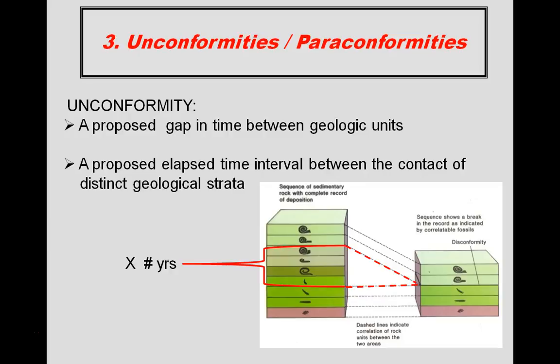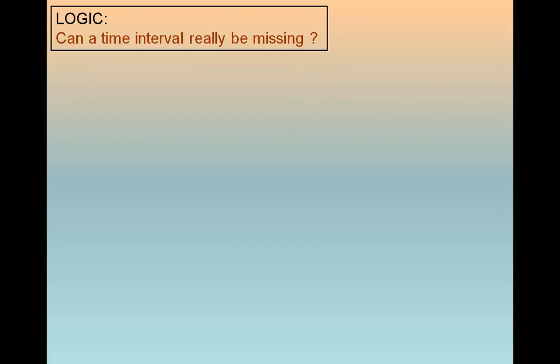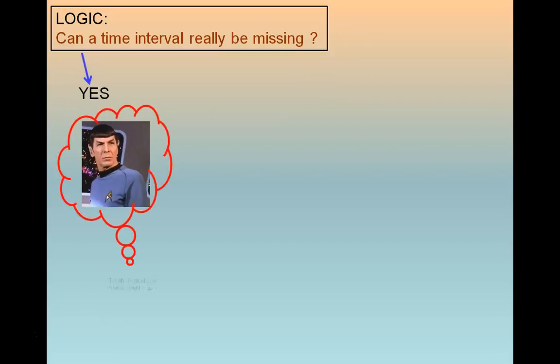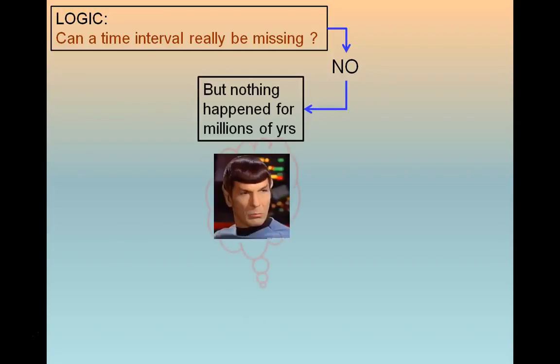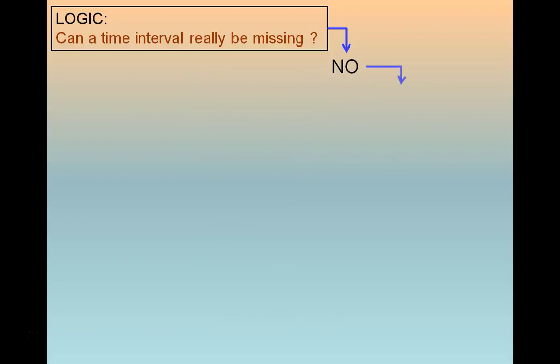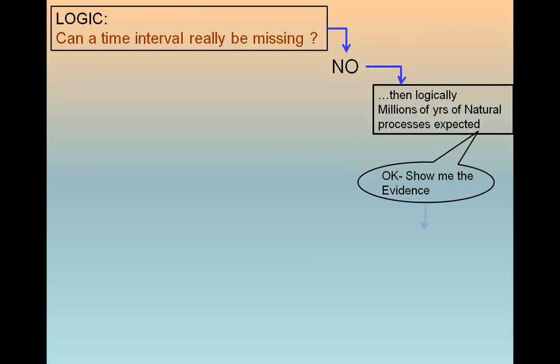We will also show our audience examples of the proposed missing rock formations, which you are told represent millions of years of earth history. The problem with that, the geologic field evidence does not support this idea, thus causing the geologic time column to essentially collapse and disappear.